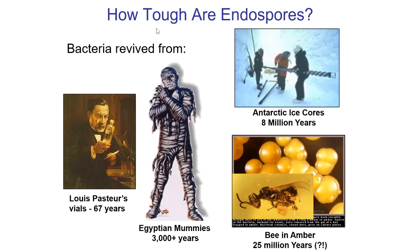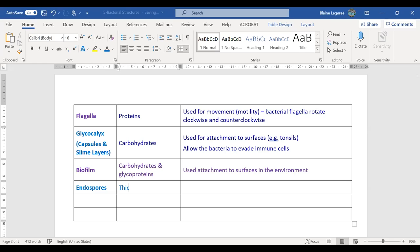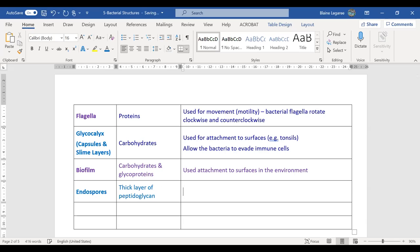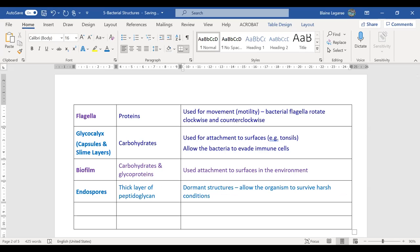Let me make a quick note on endospores: they are a thick layer of peptidoglycan and a few other things, dormant structures that allow the organism to survive harsh conditions. A student asked if this is related to cloning mammoths — no, actually, mammoths are recent enough that we have found remains with actual tissue, blood, and things like that, so scientists can get DNA from blood and hair. Worth discussing later in the semester.